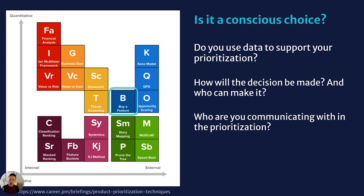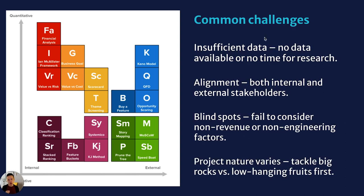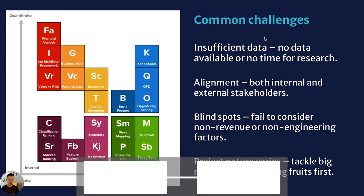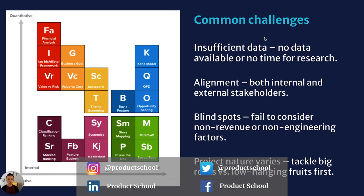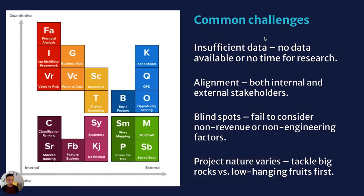With those three examples, I'd love you to think about the common challenges we have in these prioritization methods. Common challenges include: data is insufficient — sometimes we don't have data at all, so we'd have to choose an internal qualitative method. This is especially true when you're doing an MVP under a tight timeline. Alignment is another challenge — in most cases we need alignment with both internal and external stakeholders. What methods help you do that? Do you have more weight on internal or external stakeholders? That's a factor to consider when balancing alignment.